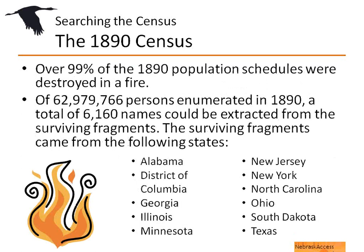The 1890 census is notable: over 99% of it was destroyed by fire. Only a small fragment is left with about 6,000 names, from particular states and specific counties within those states. You can search for ancestors in the 1890 census, but the chances of finding your particular relatives are slim — Nebraska is not among the surviving states. Even within the states that do have surviving records, it's only particular counties, so there's no guarantee of success.